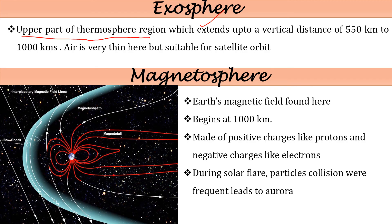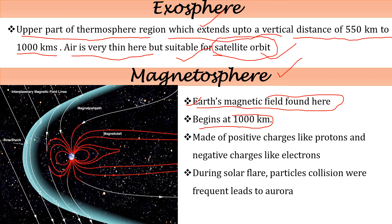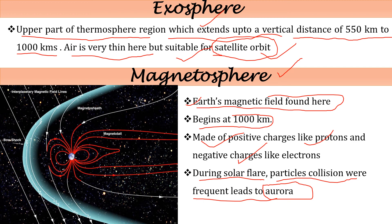The exosphere is the upper part of the thermosphere region, extending from about 550 kilometers to thousands of kilometers. The air is very thin but it is very suitable for satellite orbits. Above this is the magnetosphere, where Earth's magnetic field is found, beginning at a height of about 1,000 kilometers. It is made of positive charges like protons and negative charges like electrons. Solar flares cause frequent particle collisions, leading to the phenomenon called aurora borealis.